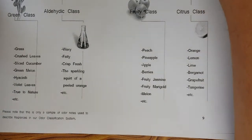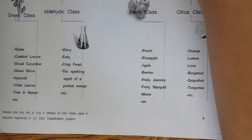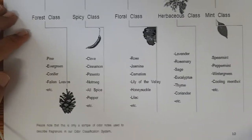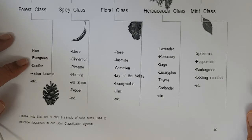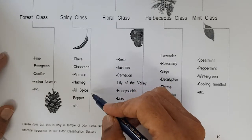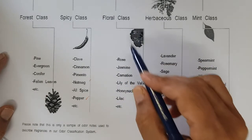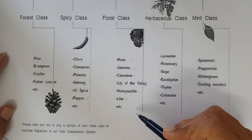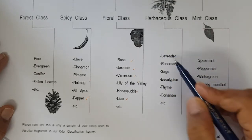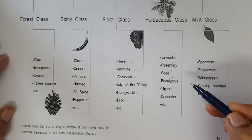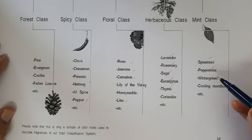Examples of middle notes include the forest class — pine, evergreen conifer, fallen leaves. Spicy notes include clove, cinnamon, nutmeg, and pepper. Floral middle notes include rose, jasmine, carnation, lily of the valley, honeysuckle, and lilac. Herbaceous notes include lavender, rosemary, sage, eucalyptus, thyme, coriander, mint, spearmint, peppermint, wintergreen, and cooling menthol. These are all examples of middle notes.